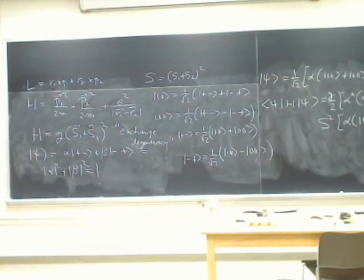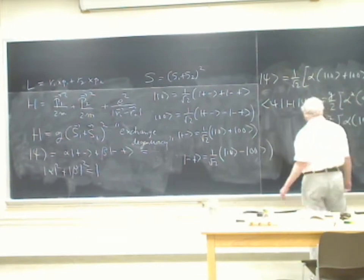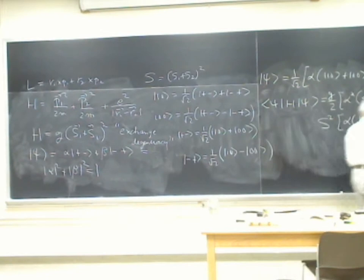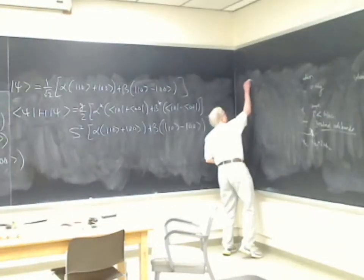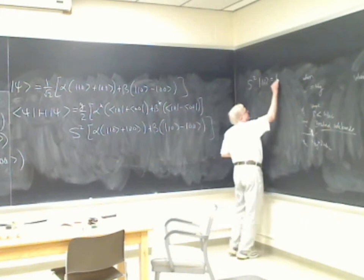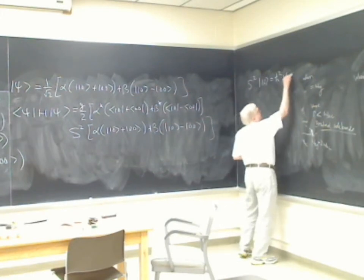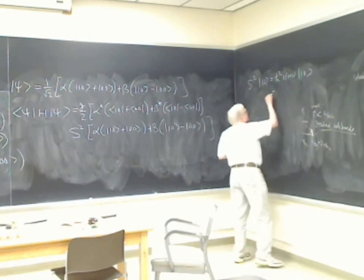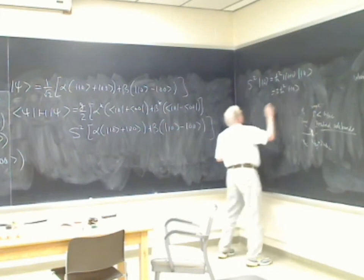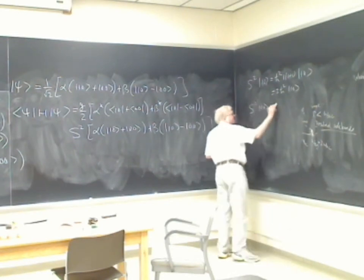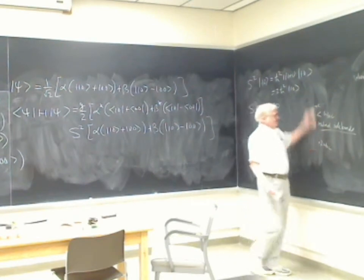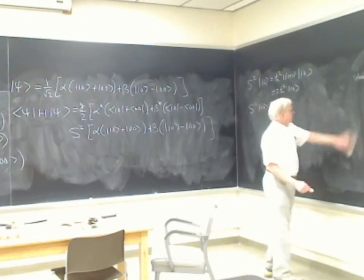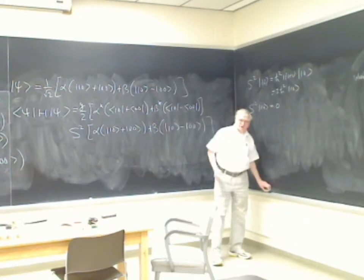Now, S squared on |1,0⟩ is ℏ² times 1 times (1+1) times |1,0⟩, so that's 2ℏ² |1,0⟩. And S squared on |0,0⟩ is 0, because the spin is 0 — it would be ℏ² times 0 times (0+1), which is 0.